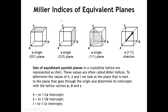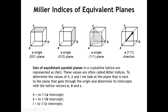The next image is very similar, but the plane intercepts the B lattice vector at one unit cell, so its fractional coordinate is one in B. This is the (0, 1, 0) plane. In the third image, the lattice plane intercepts all three lattice vectors A, B, and C at one lattice vector each. The intercepts are 1, 1, 1, and so the Miller indices of this plane are also (1, 1, 1).